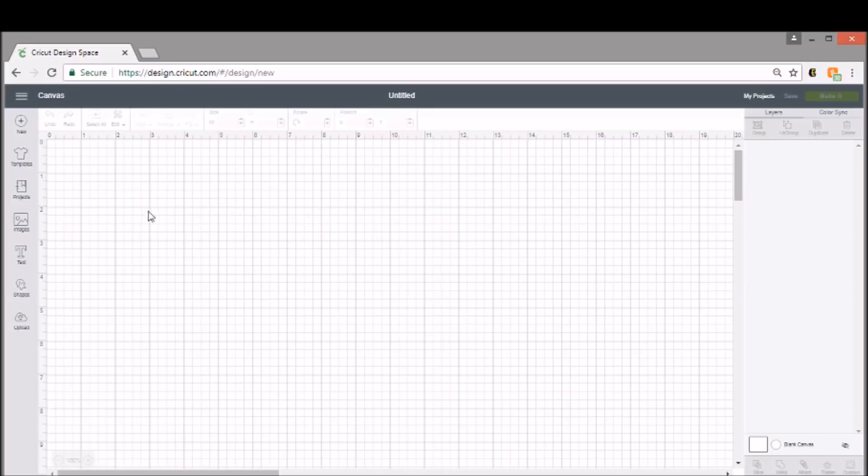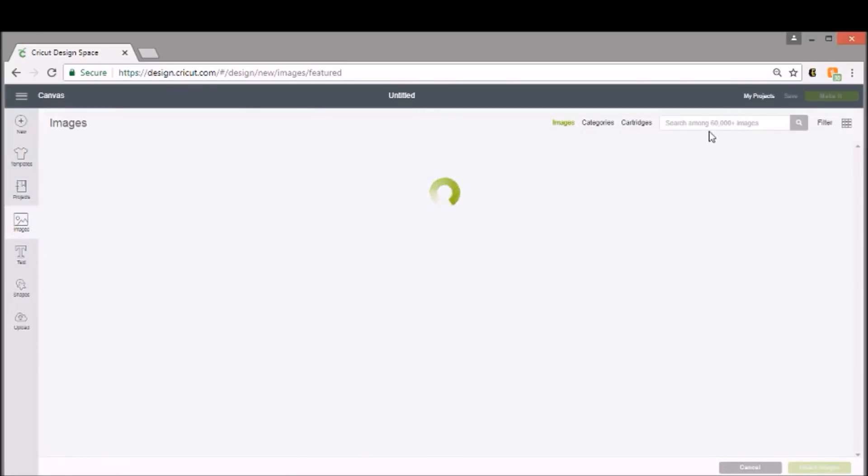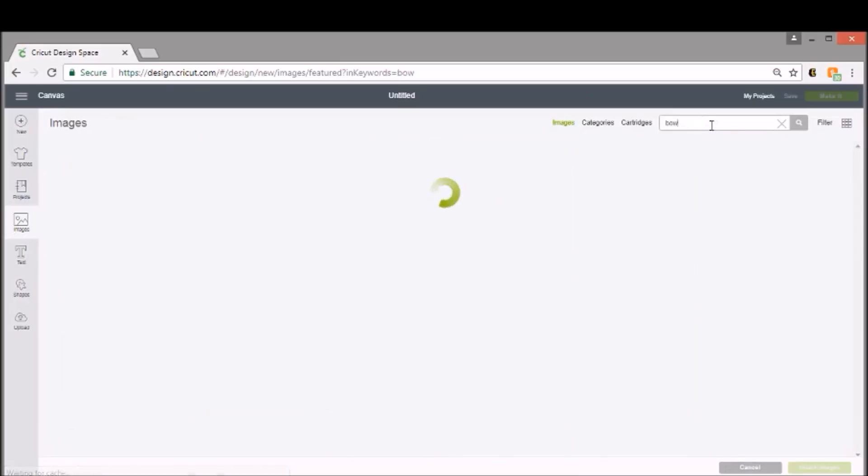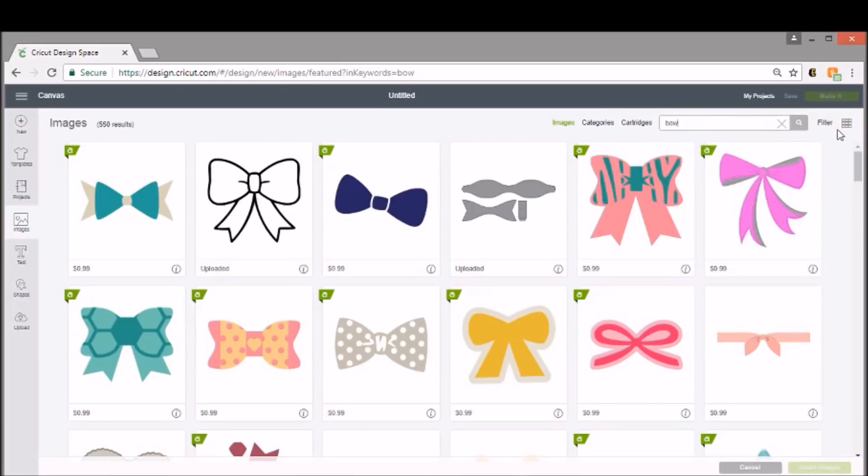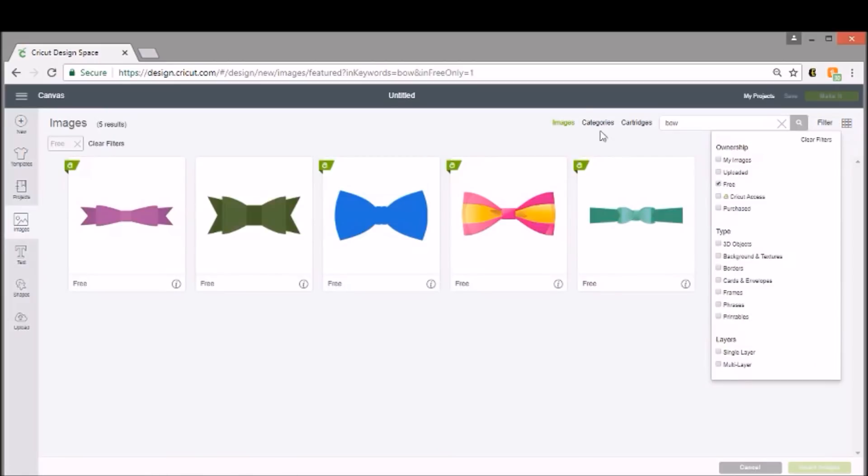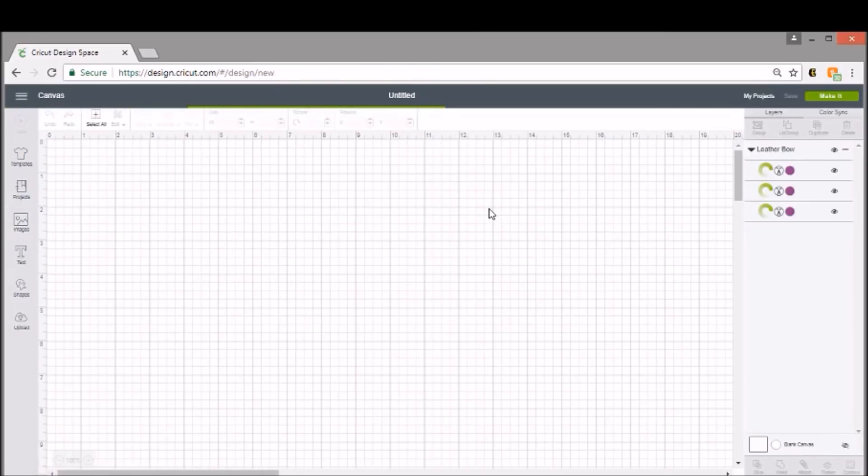The first thing we're going to do is use Design Space for this one because they have free images. So we're going to go into images and up here where it says search, I'm going to search the word bow. I'm going to actually filter this because it makes it a little easier, and you can just click free. That shows you all the different bow options that you can use that are free. I'm going to show you two different ones, this purple one and this green one. You can see they're a little bit different shaped, so it'll be really fun to do two different kinds.